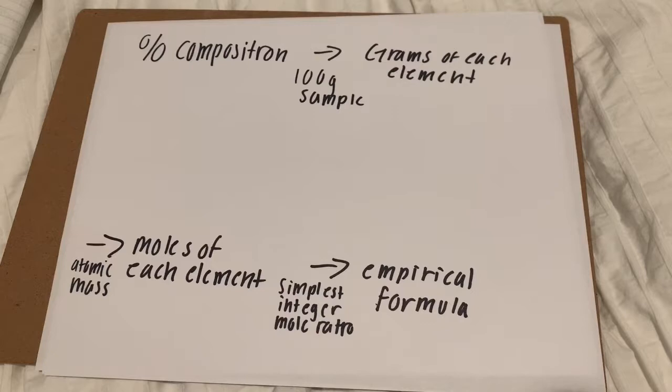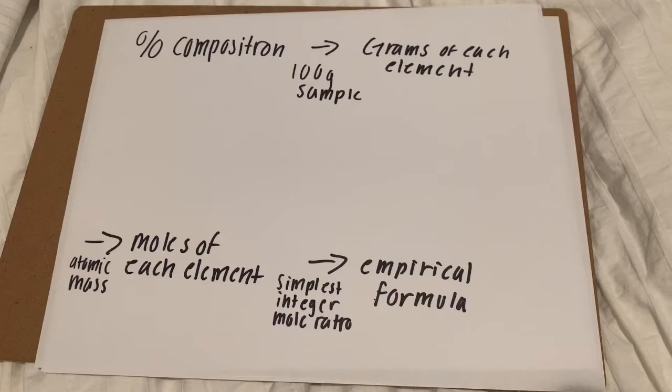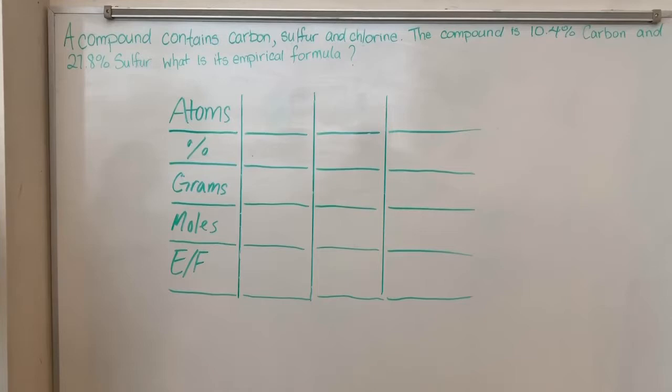A compound contains carbon, sulfur, and chlorine. The compound is 10.4% carbon and 27.8% sulfur. What is its empirical formula?